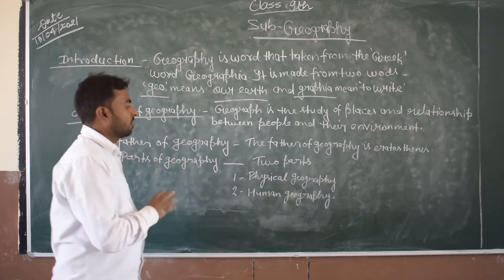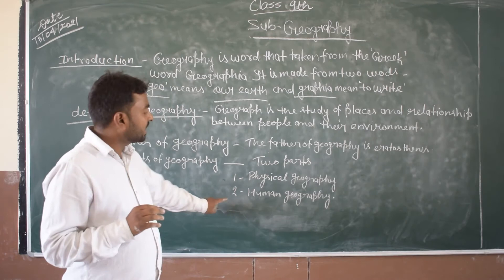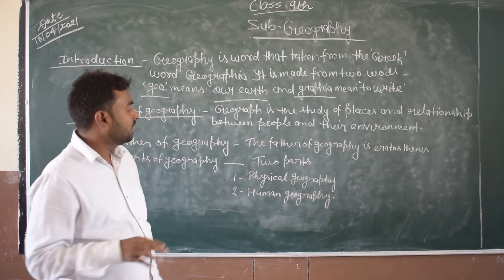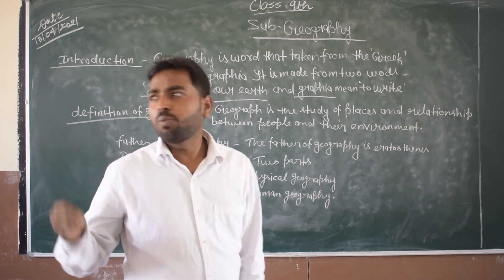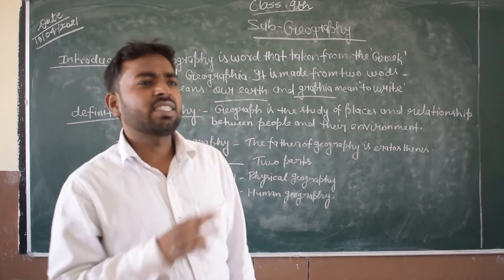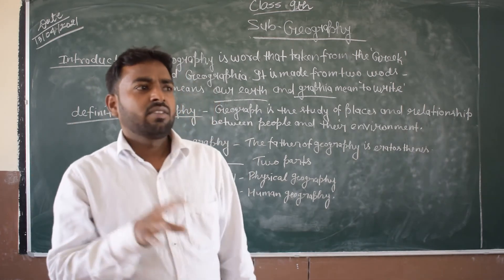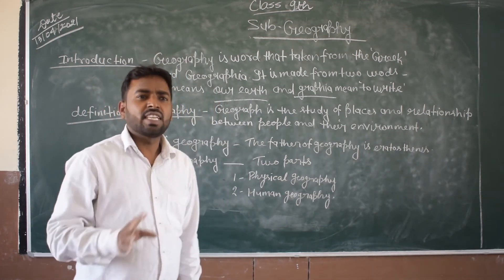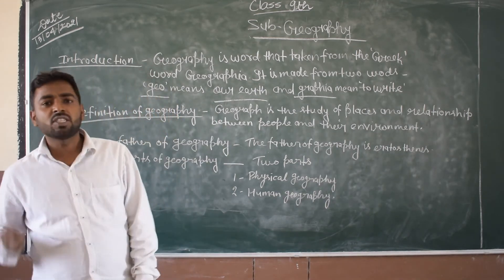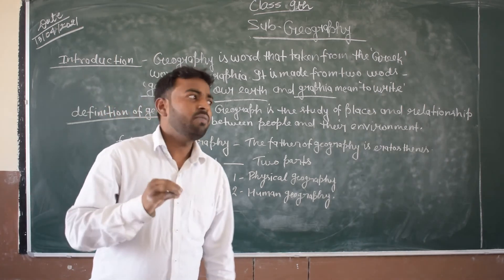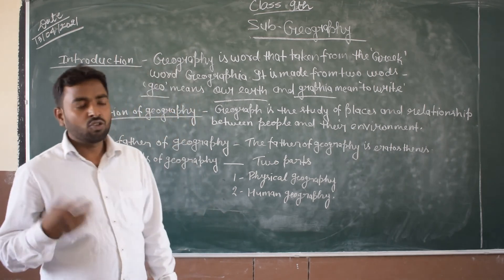There are two main parts of geography. The first part is physical geography and the second part is human geography. In physical geography, we study natural features. In human geography, we study human-made things.